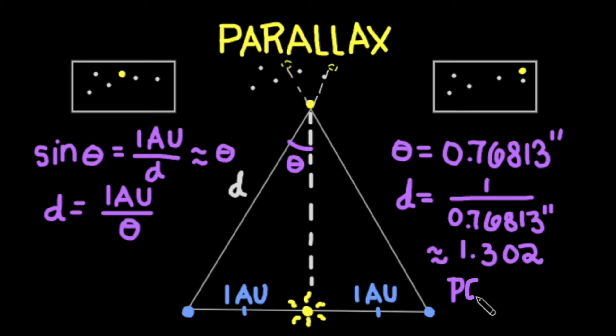1 parsec is equivalent to about 3.261 light years, so we can multiply 1.302 parsecs by 3.261 to say Proxima Centauri is about 4.246 light years away.